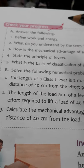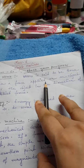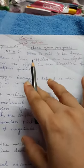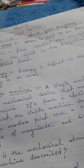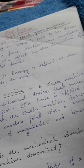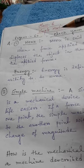The first question is: define work and energy. Work is said to be done when a force is applied on an object and the object gets displaced in the direction of the applied force. Energy is defined as the ability or capacity to do work.